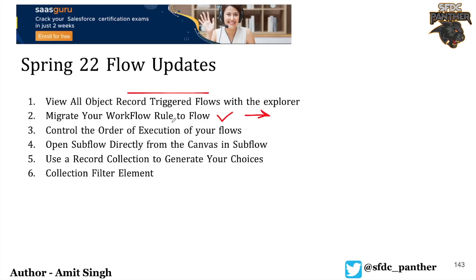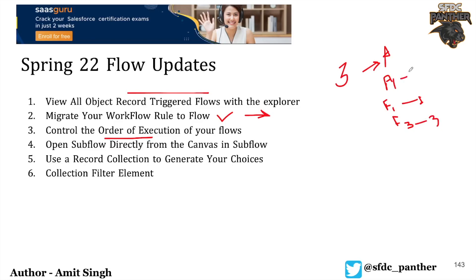Now we can control the execution order of our flows. Suppose there are three flows on an Account object: A1, F1, and F3. If you want the order of F1 to be 1, A1 to be 2, and F3 to be 3, you can define that order in your flow. I'll show you how to actually define that.